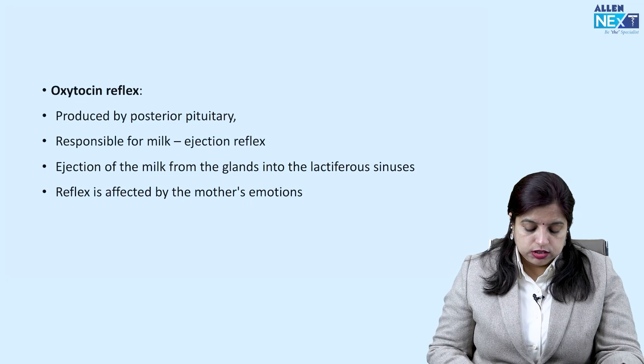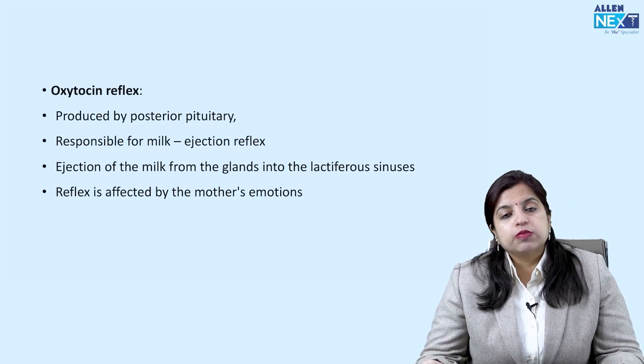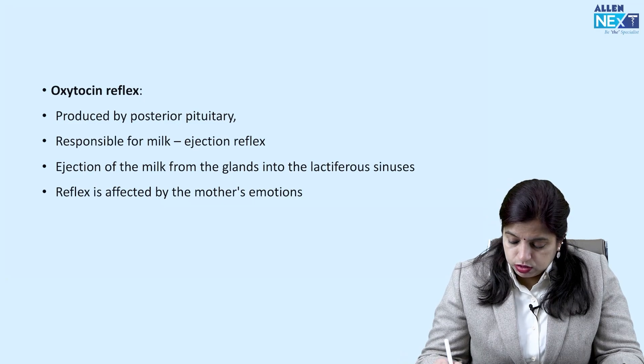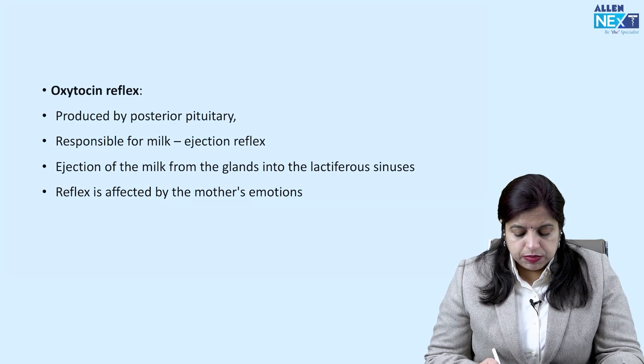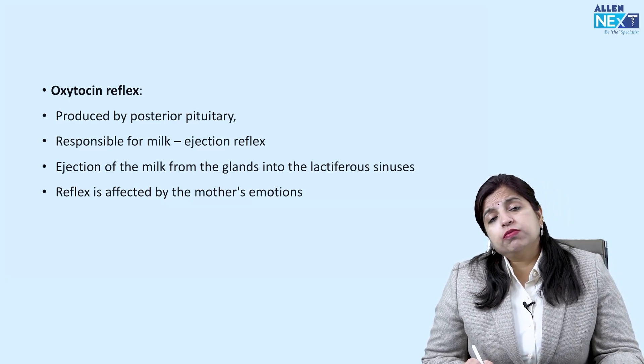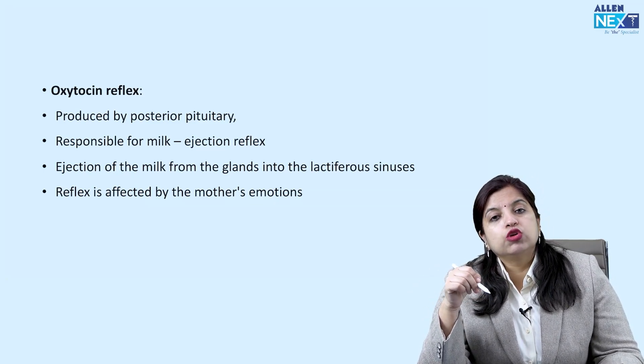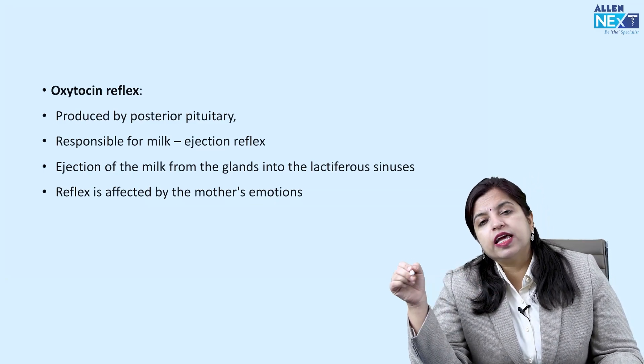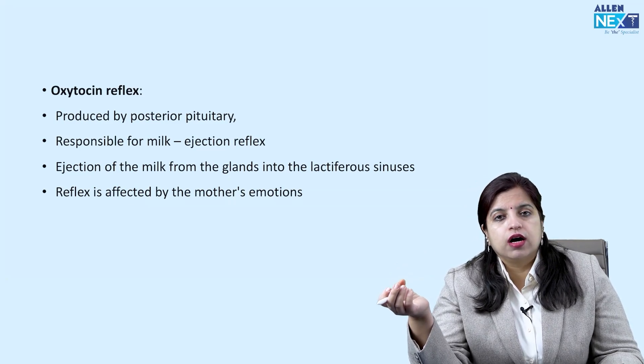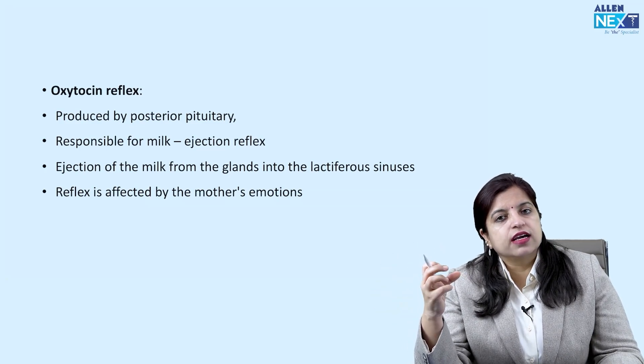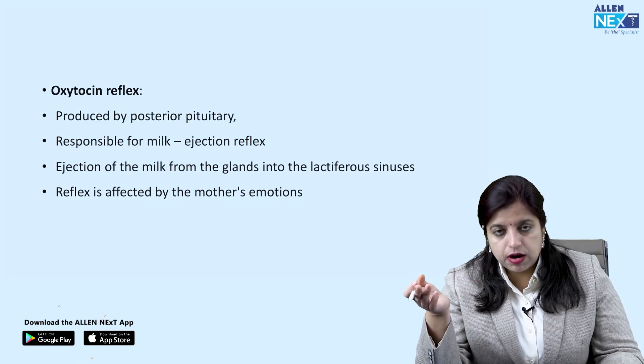Then let us move on to the oxytocin reflex. Oxytocin is produced by the posterior pituitary. It is responsible for milk ejection. It causes ejection of milk from the glands into the lactiferous sinuses, and those lactiferous sinuses are located under the areola. So, the baby would press the areola and take out this milk. That is what the oxytocin reflex is all about.